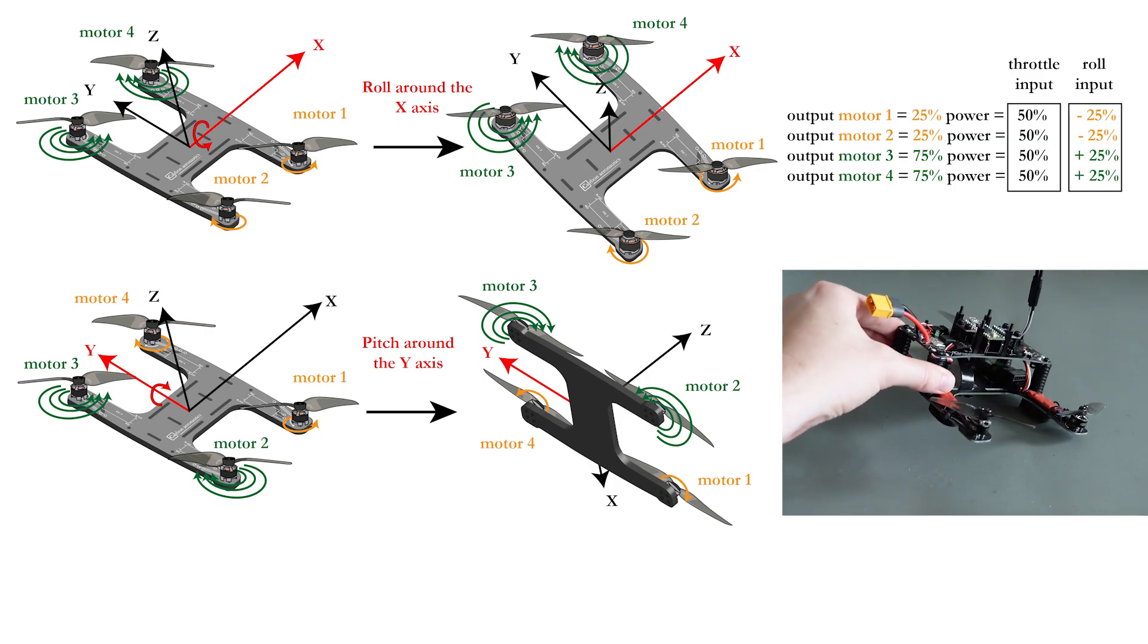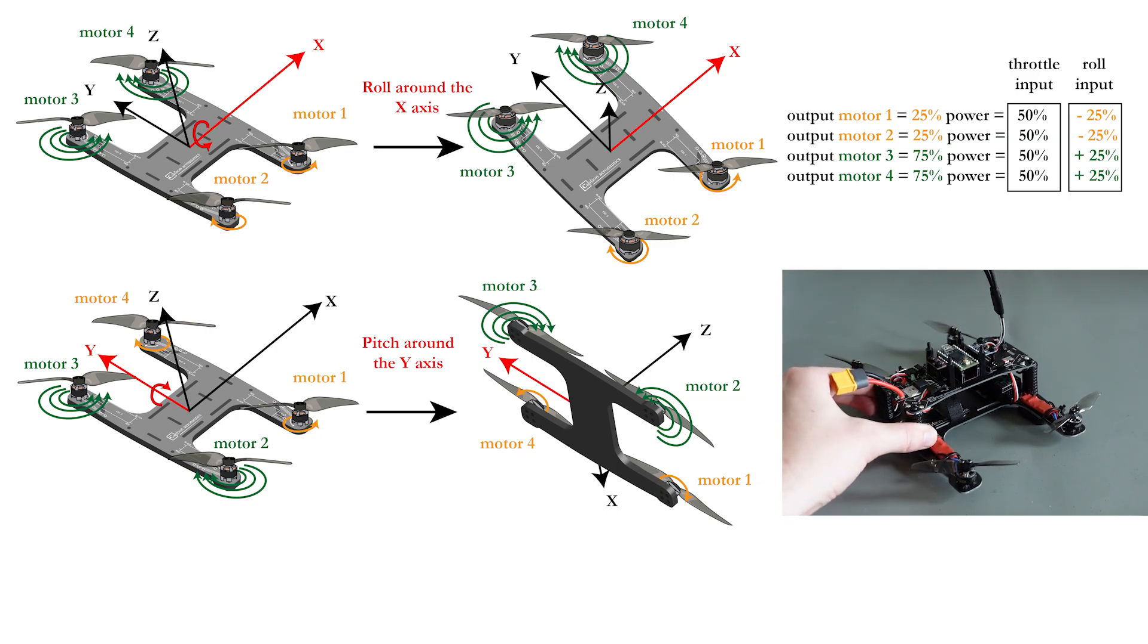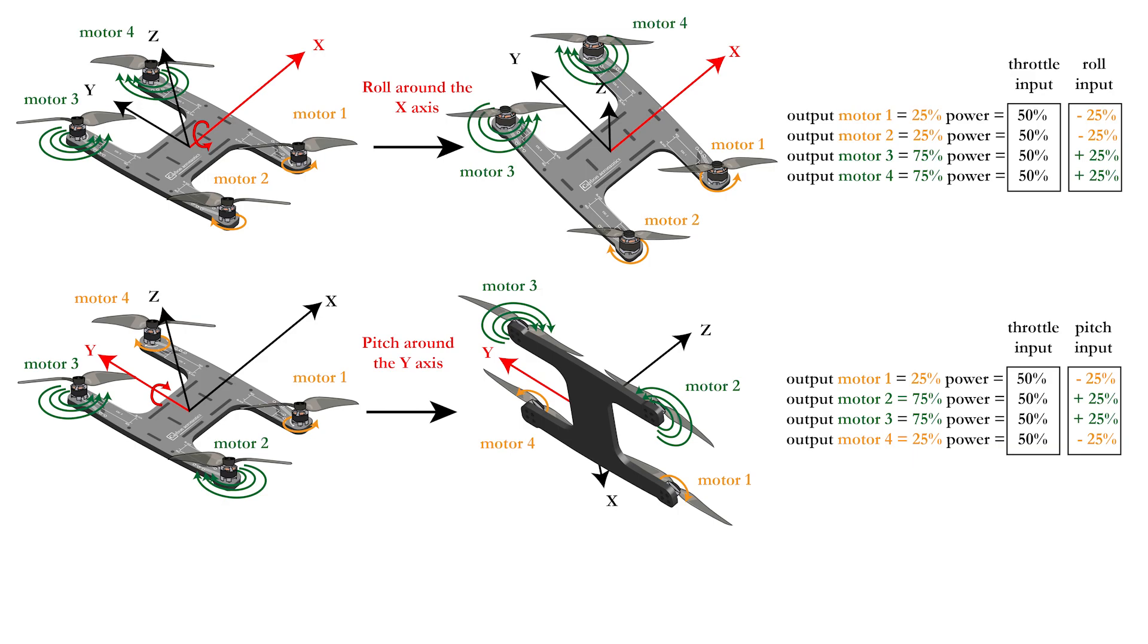In this case, motors 2 and 3 will need to work harder than motors 1 and 4. Just add 25% power to motors 2 and 3 and subtract the same amount from motors 1 and 4.